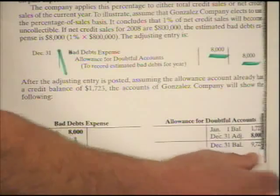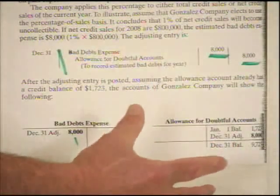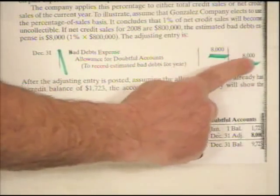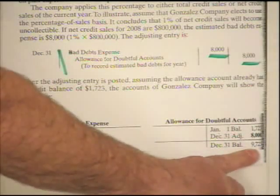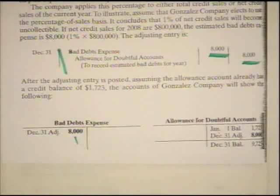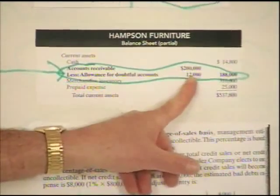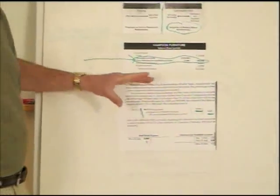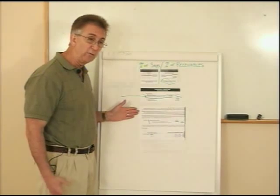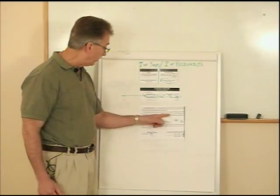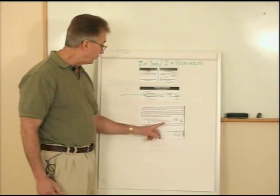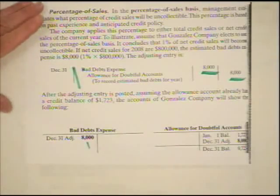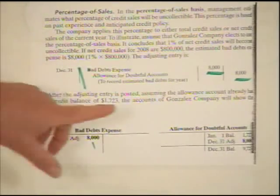We do not care in this method what the allowance account ends up being. The important thing under the percentage of sales is that we take a percentage of our sales, multiply it out, and that's our bad debt. The credit to the allowance account is just the byproduct — it gives the account a new balance. The whole key on this method: simply take your net credit sales for the year, multiply by the percentage given, debit bad debt expense, and credit the allowance account. This method is more concerned about the number going on the income statement.